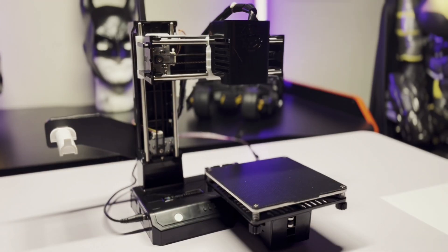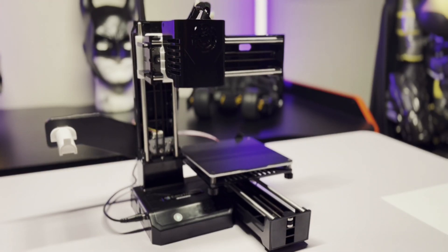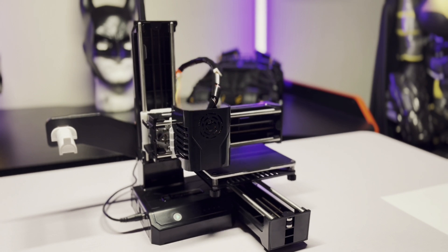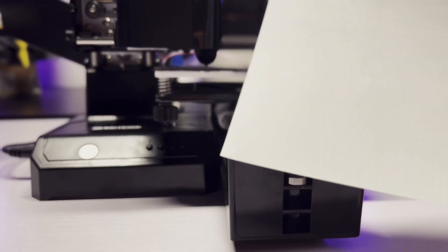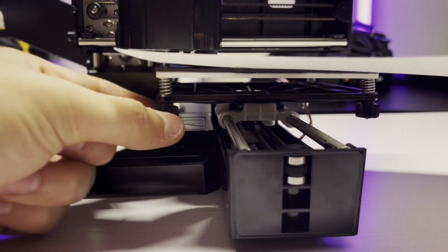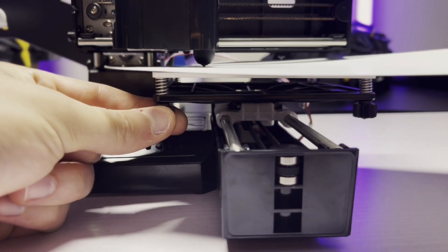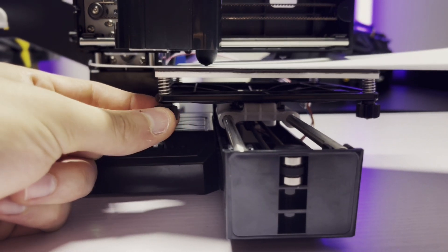To level the bed, I press the number one on the front of the printer to move the extruder to the first position of the print bed. I use a piece of paper and adjust the screw nut at the bottom of the platform. The height of the platform should be adjusted until there's a slight tug on the paper by the nozzle.